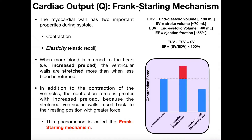The myocardial wall — that is the muscle of the heart, particularly of the ventricles — has two important properties during systole. Remember, systole is when we're in the contraction phase. Those two important properties are: one, obviously the contraction itself — if the heart didn't contract there would be no blood moving. But the one that's not so obvious is elasticity.